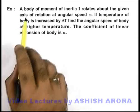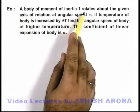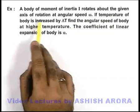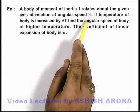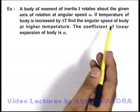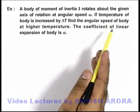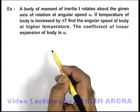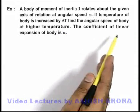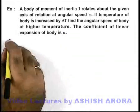In this example it is given that a body of moment of inertia I rotates about the given axis of rotation at angular speed ω. If temperature of body is increased by ΔT, we are required to find the angular speed of body at higher temperature. We are also given that the coefficient of linear expansion of body is α.